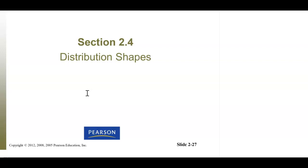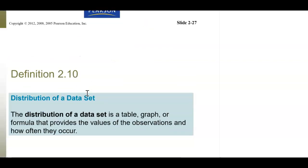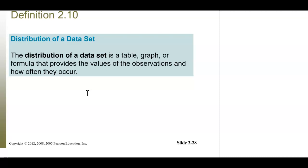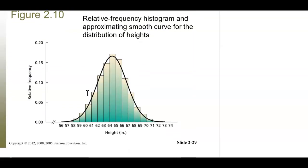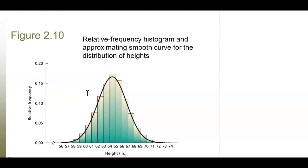We need to represent data visually because we need to understand the shapes. The distribution of a data set is a table, graph, or formula that provides the values of the observations and how often they occur. The most familiar distribution is the normal distribution — the bell-shaped curve. Here's a frequency table put into a histogram that shows a normal distribution.